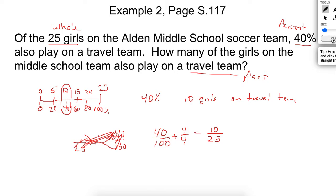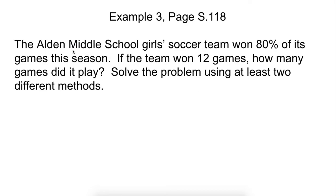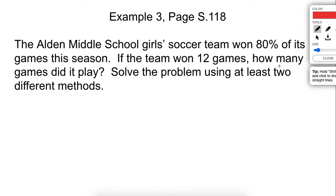Let's go ahead and try another one. The Alden School Girls Soccer Team won eighty percent of its games this season. If the team won twelve games, how many games did it play? Solve the problem using at least two different methods. They won eighty percent, and the team won twelve games. This is our percent, this is our part. We need to find the whole - how many games did they play in total.